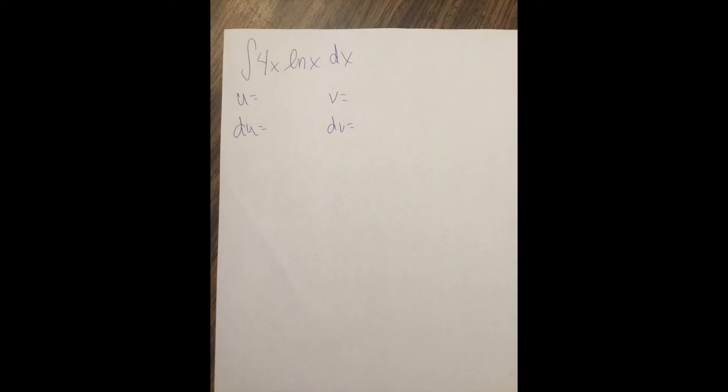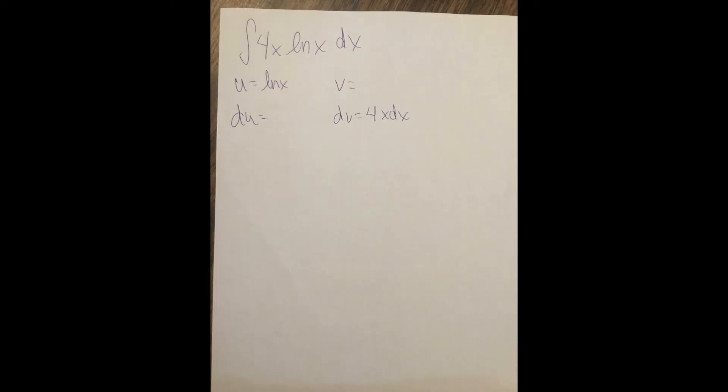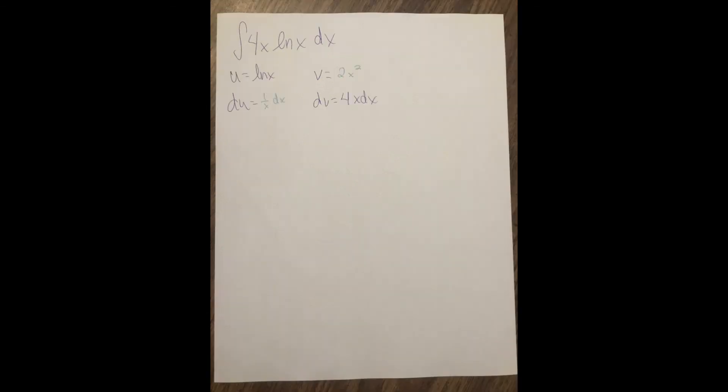Remember when you do these, you have to be able to do the antiderivative of dv. So I wrote down here that dv is ln of x to prove a point that then you can't do v, so you have to make ln of x u, and the rest of it is dv.